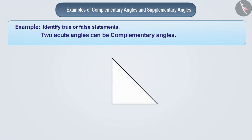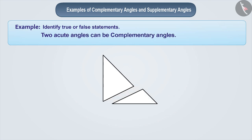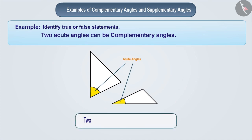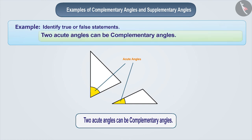Statement: Two acute angles can be complementary angles. If we divide a 90-degree angle and make two angles, then we will get acute angles. This means two acute angles can be complementary angles — therefore the given statement is correct.